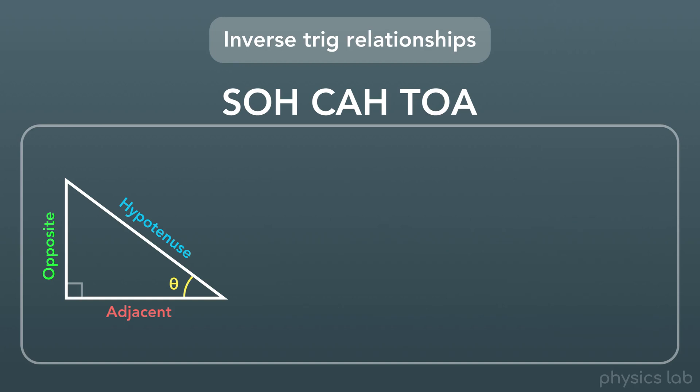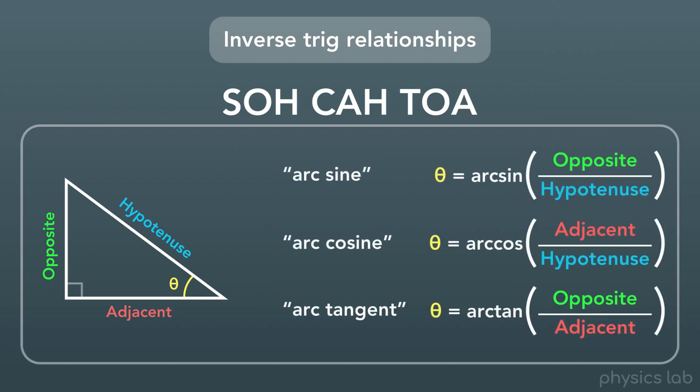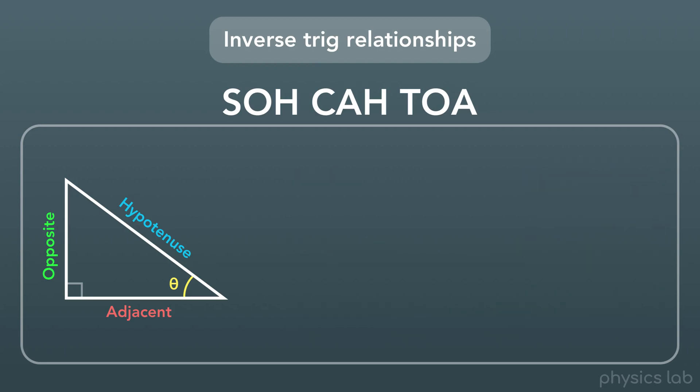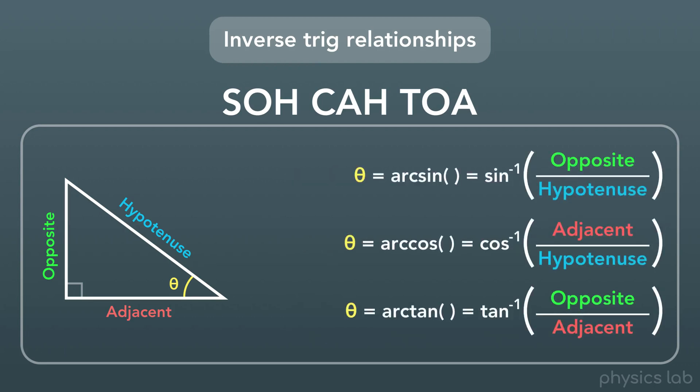The other way you might see these written is like this: arc sine, arc cosine, and arc tangent. If we write it out this way, we write arc, and we don't include the little negative one above the function. So, two different ways to write them, but they're the same functions.